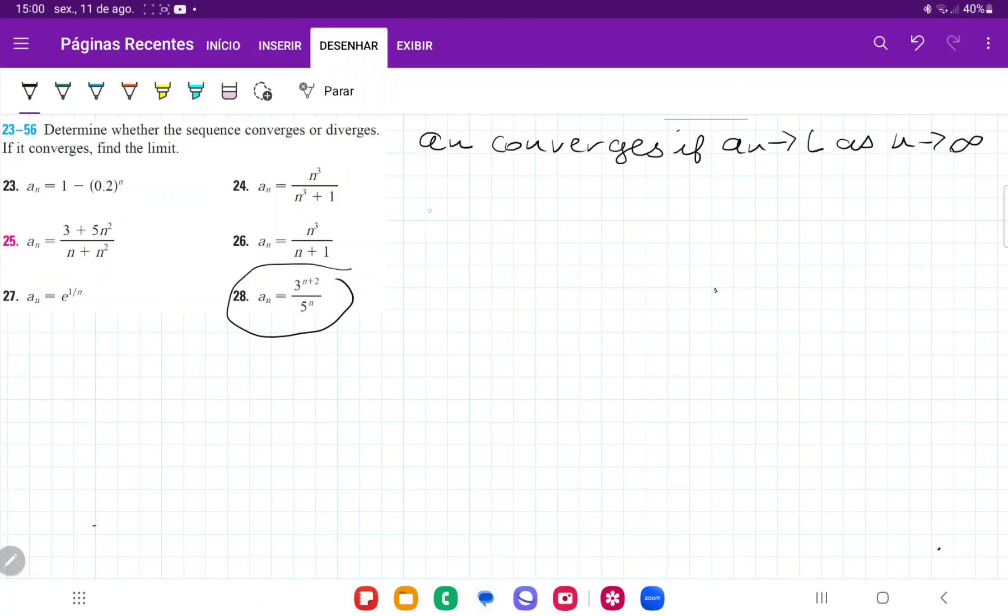So what we have to do here is we have to take the limit as n approaches infinity of 3^(n+2) over 5^n and see if this approaches a specific number.